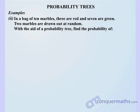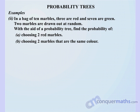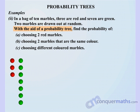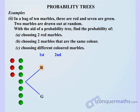Our second example: in a bag of 10 marbles, three are red and seven are green. Two marbles are drawn out at random. With the aid of a probability tree, find the probability of: a) choosing two red marbles, b) choosing two marbles that are the same colour, and c) choosing different coloured marbles. The first marble could be red or green. The chance of red is three out of ten; the chance of green is seven out of ten.